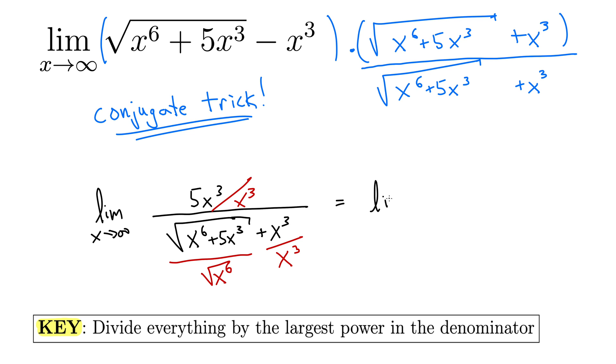Okay, so this limit becomes the limit as x goes to infinity of, well, we just have 5 left up top. Down here we have the square root of 1 plus 5 over x cubed inside the radical, plus 1 outside the radical.